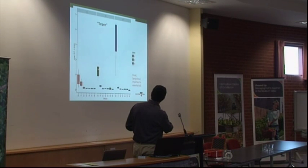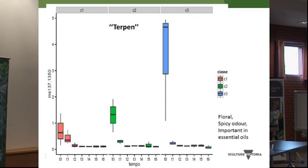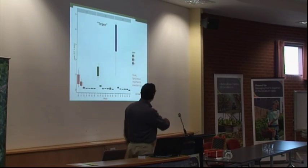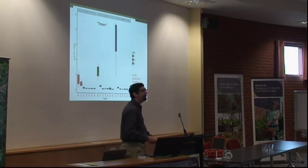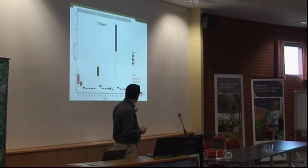Terpenes — floral and spicy odors important in essential oils — are not incredibly important in stone fruit; they are more important in apples and pears. In stone fruit, these are the odors extracted for candies or shampoos. As we can see, they are definitely present in different quantities at harvest depending on maturity, and the more mature the fruit the better it smells. After three weeks of storage, these odors disappear completely and we are not able to recover them at all.